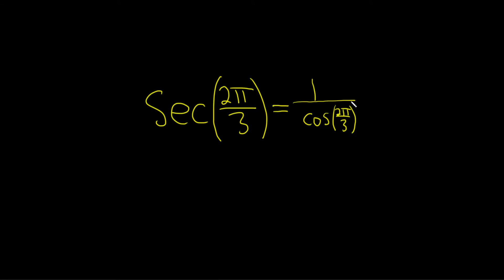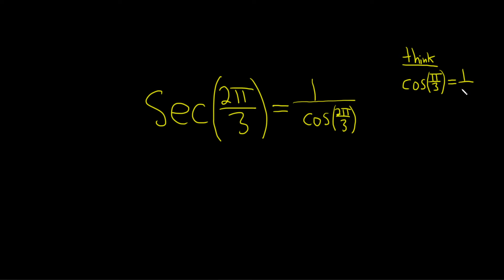Now I just focus on finding the cosine of 2π over 3. Whenever you have the cosine of 2π over 3, my mind always goes to: what is the cosine of π over 3? Because π over 3 is the reference angle. So whenever you have something like this over 3, just jump to the trig function of π over 3. From memory — this is the hard part — it's 1 half. I just have it memorized. Super useful.